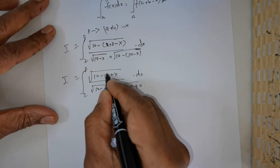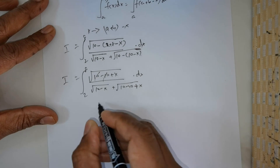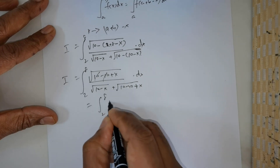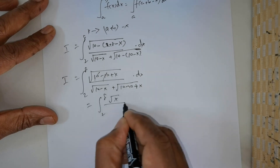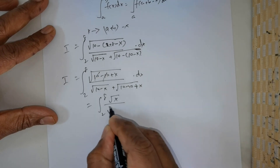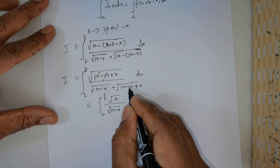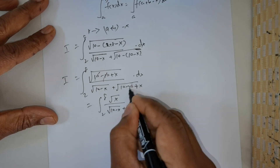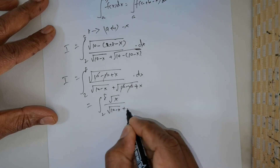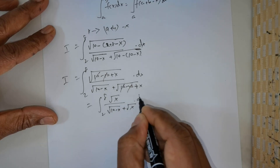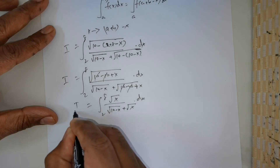So this is I. Now, the negatives cancel out, giving us the integral from 2 to 8 of √x divided by [√(10 - x) + √x] dx. This is also I.